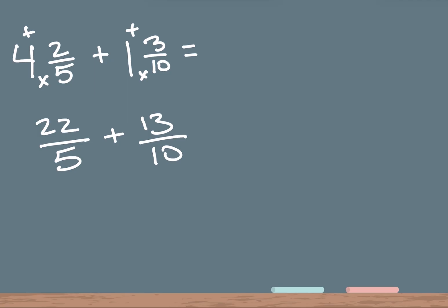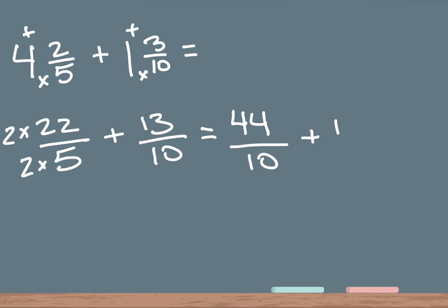Now we can add the fractions, but we have to have a common denominator, meaning the bottom two numbers have to be the same. If we take 5 times 2 that gets us to 10, and whatever you do to the bottom you have to do to the top as well, so we multiply by 2. Let's rewrite this: 22 times 2 is 44 over 10, plus 13 over 10. Now we have a common denominator of 10, so we add the top two numbers: 44 plus 13 is 57 over 10.